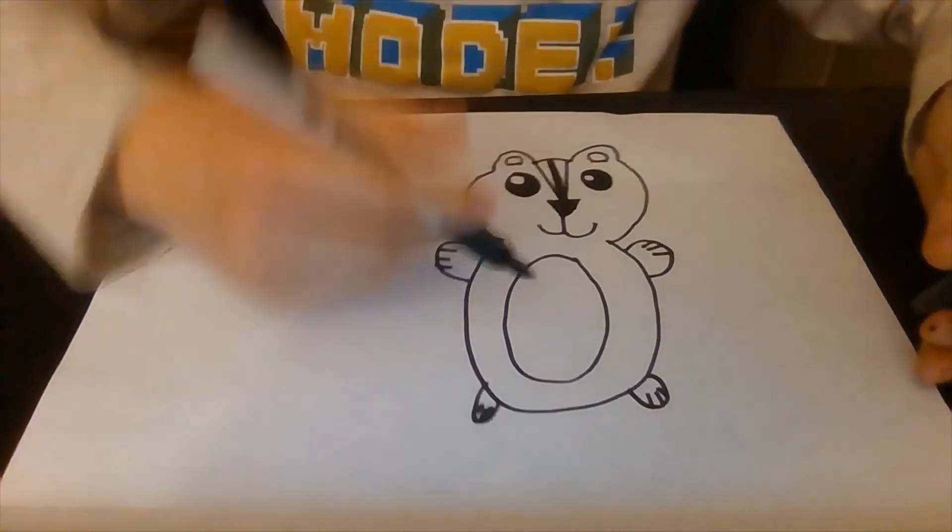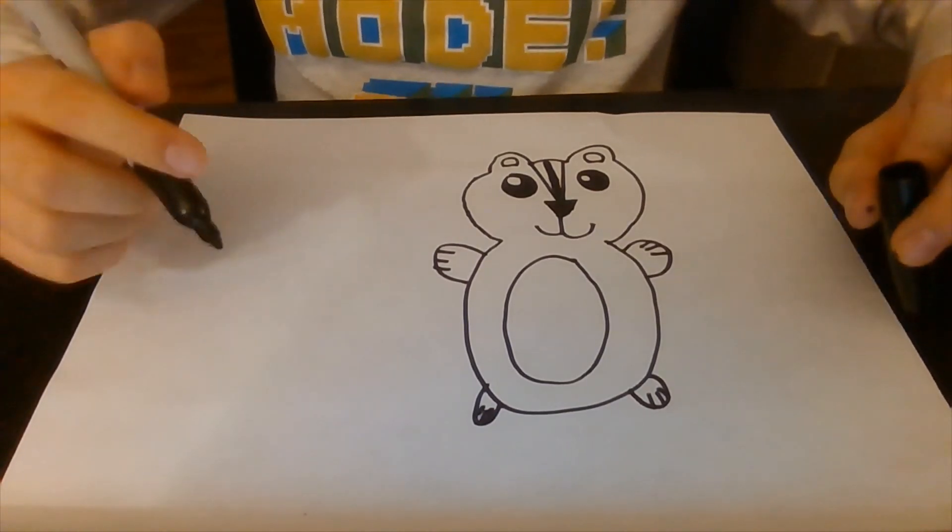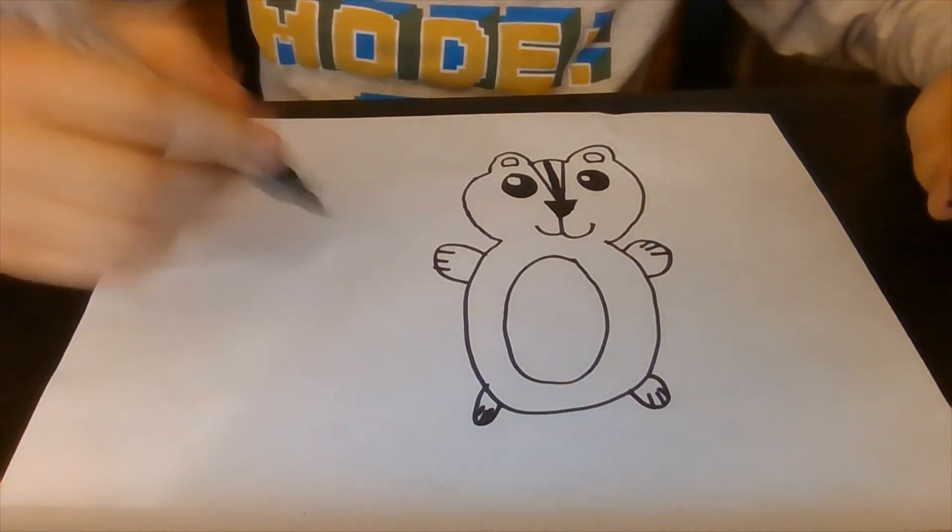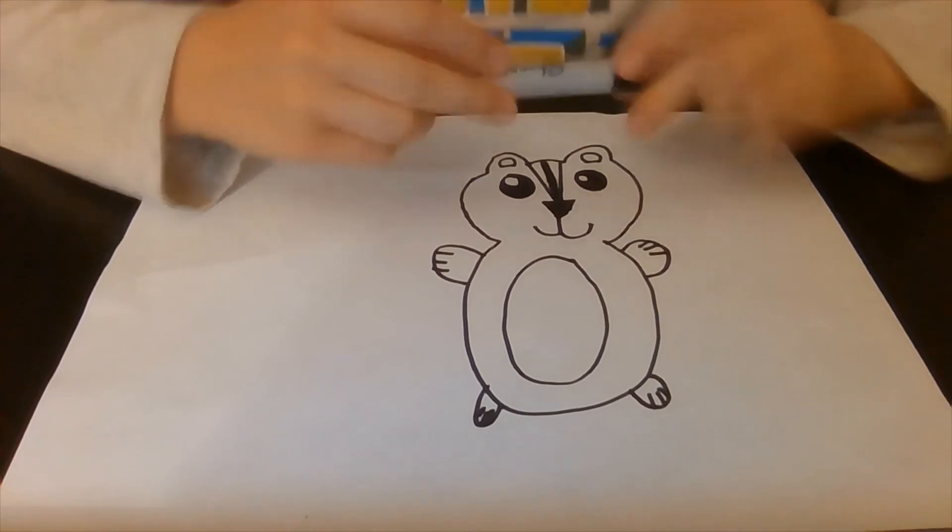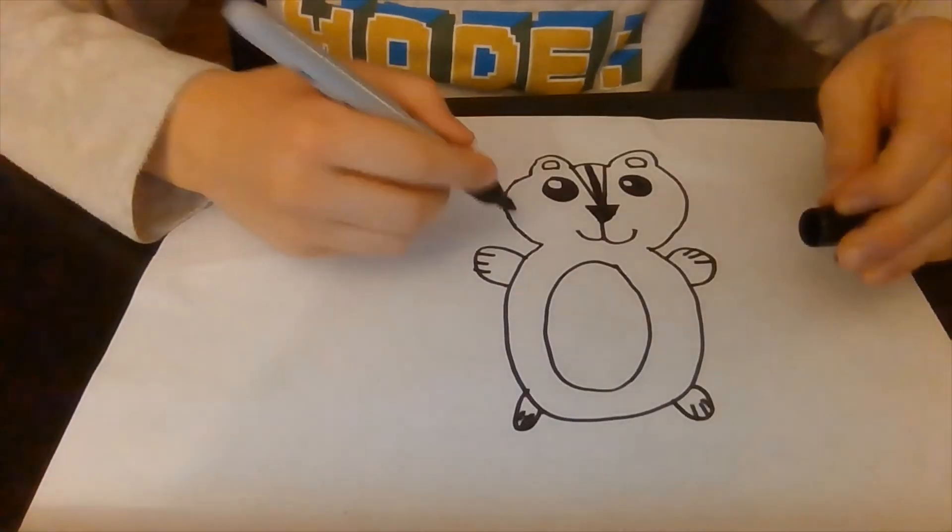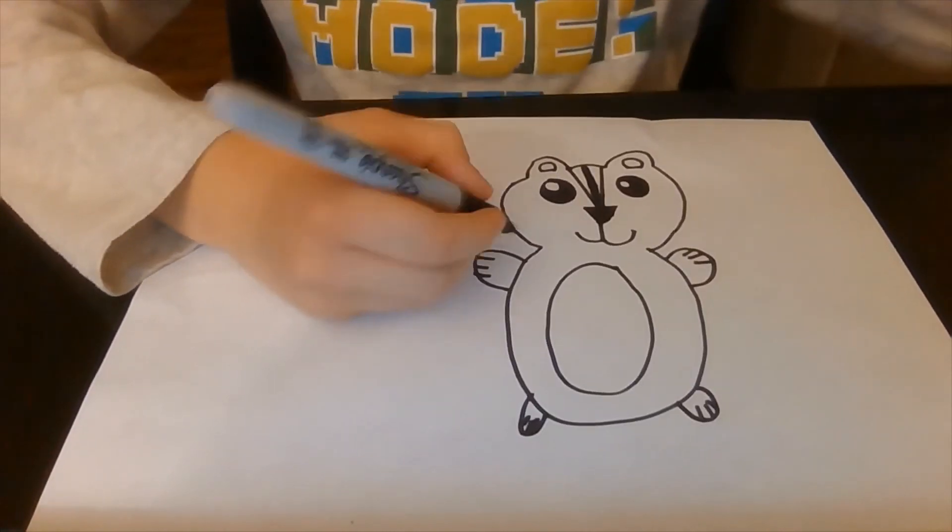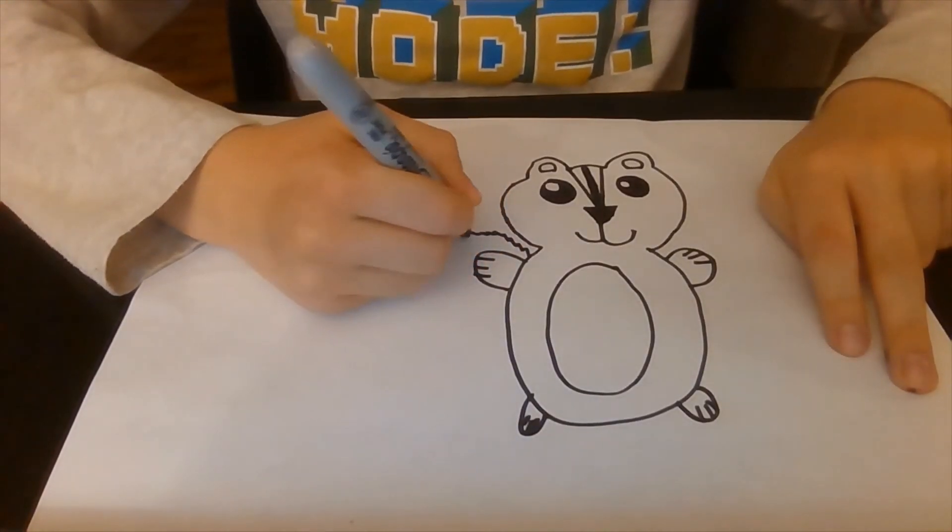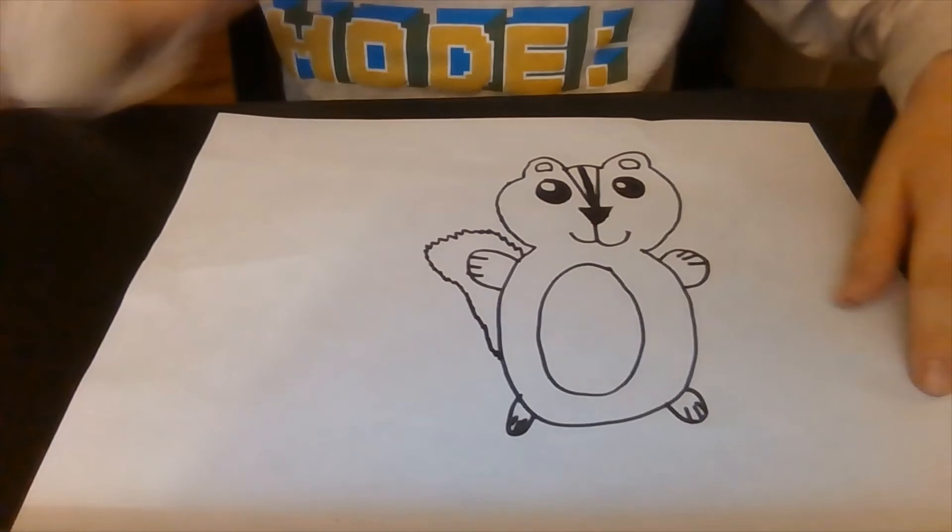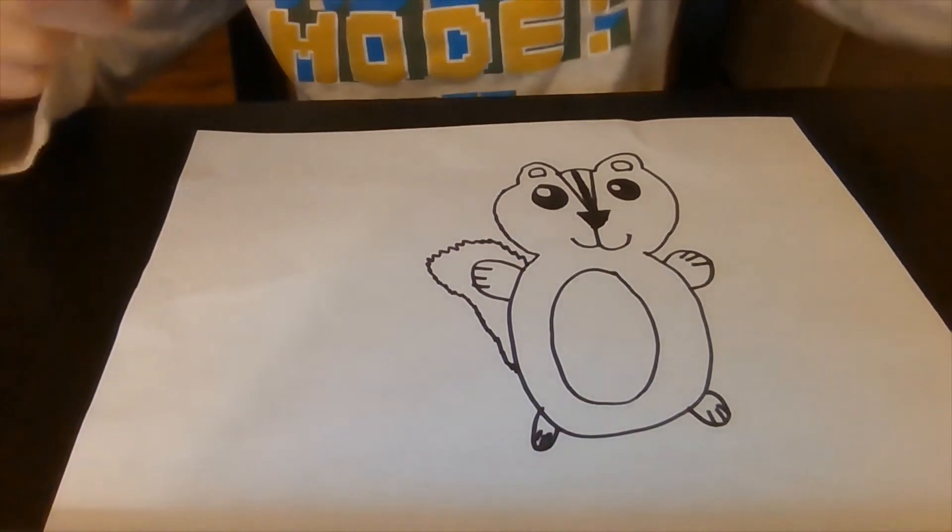Now his tail. Do chipmunks have a straight tail or a bushy tail? Remember, mice have straight, chipmunks have bushy tails. So we're going to draw a little bushy thing coming out this side like this. And I'm going to make it go back in like that. He really looks like a chipmunk, doesn't he?